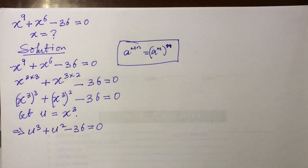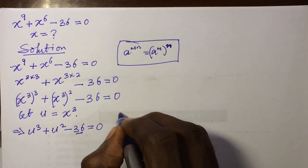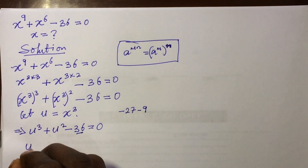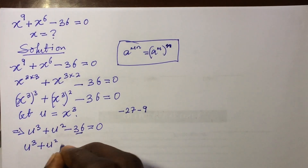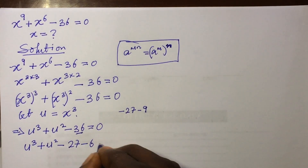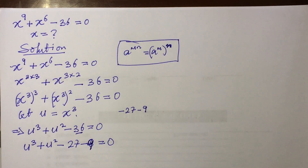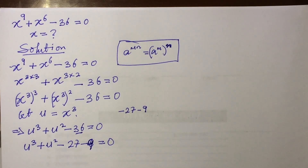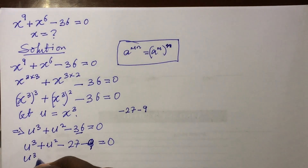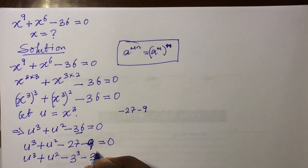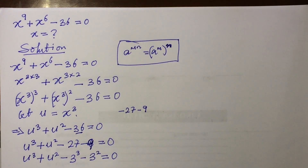Next, we look at the minus 36. We can rewrite 36 as 27 plus 9. So we have: u³ + u² − 27 − 9 = 0. Now, with 3 as a power, we can rewrite 27 as 3 to the power of 3, and 9 as 3 to the power of 2. This gives us: u³ + u² − 3³ − 3² = 0.